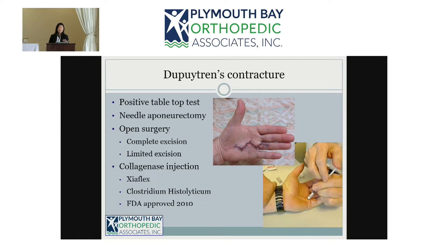I usually do a complete excision because if I'm already there I might as well. The problem with surgery is it is kind of a big procedure — as you can see from the incision here, there are zigzag incisions from the palm all the way into the finger. We have to zigzag the incisions because you can't cross a crease straight through, otherwise the scar contracts and causes a different kind of contracture. Recovery from surgery is quite intensive.